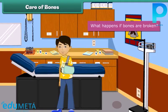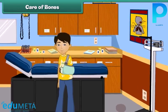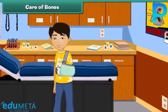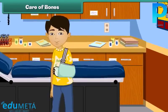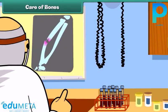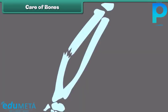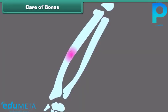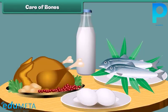What happens if bones are broken? Is it possible to join them? The broken bones can be joined with the help of plaster. The plaster gives the bones support from outside. For the growth and repair of bones, we must eat plenty of protein-rich foods.